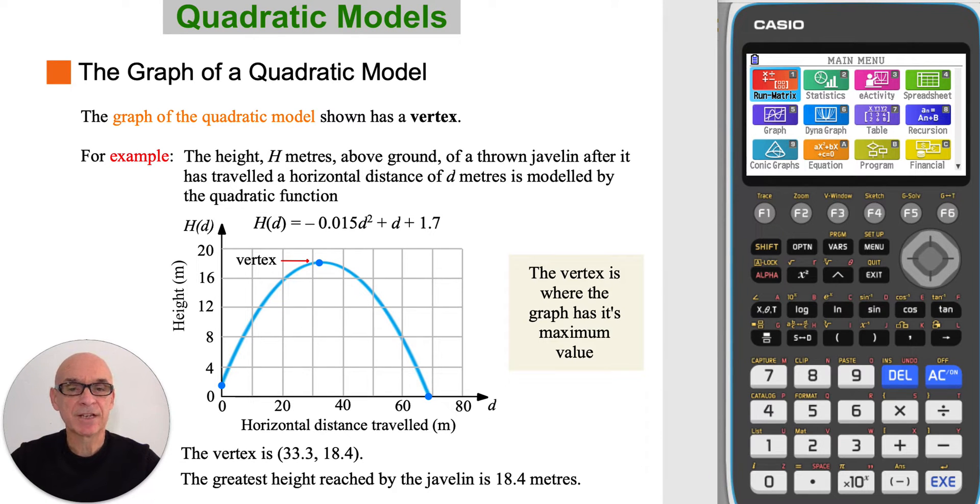The model has a vertex, whose coordinates will be found using the graphing technology of your calculator. The vertex for this model is a maximum point, with coordinates 33.3 comma 18.4. We can interpret the y-coordinate as the greatest height reached by the javelin, and that's 18.4 meters.